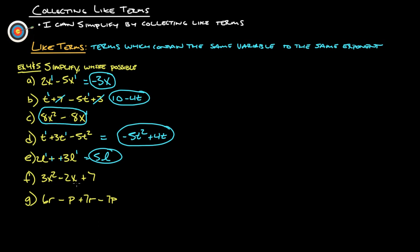3x squared minus 2x plus 7. That's x to the second, x to the first, and there's no x there. So these do not play together—we just leave it as it is. You can't simplify that.